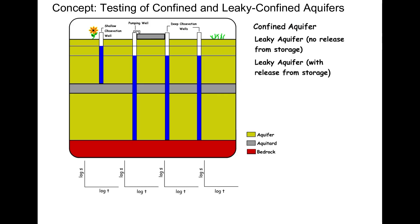This cross-section includes an unconfined aquifer, an aquitard shown in gray, and an underlying confined aquifer. There are four wells. The left well monitors the unconfined aquifer water level.